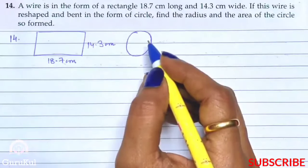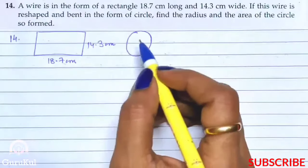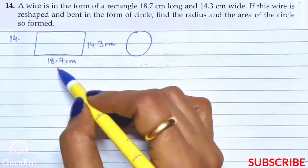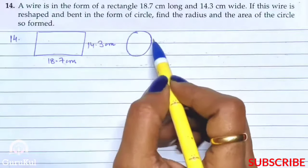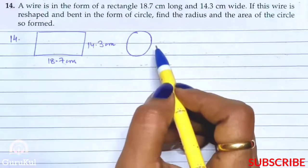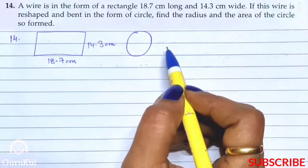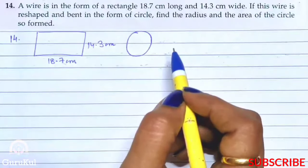So this sum is quite similar to the previous sum, where the perimeter of the rectangle is equal to the circumference of the circle which is equal to the length of the wire.